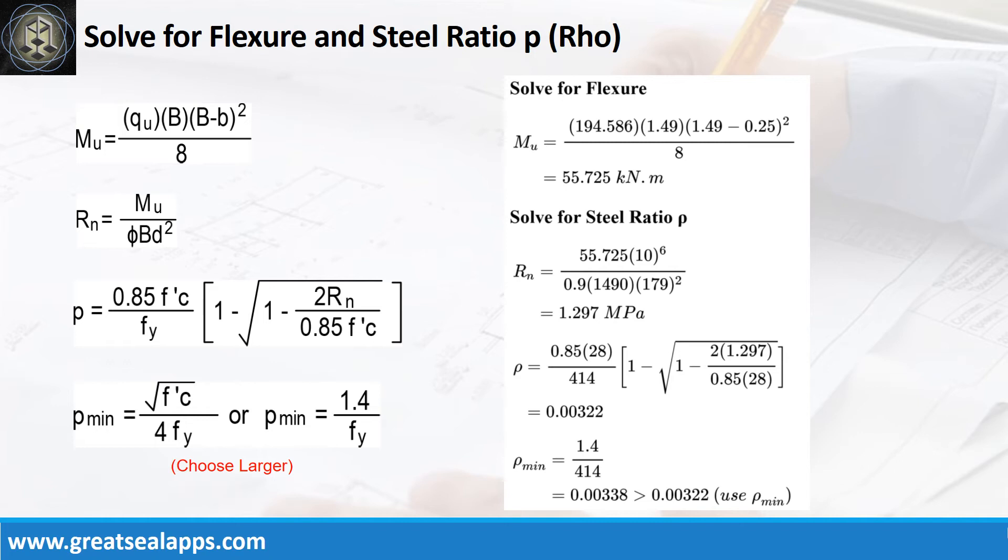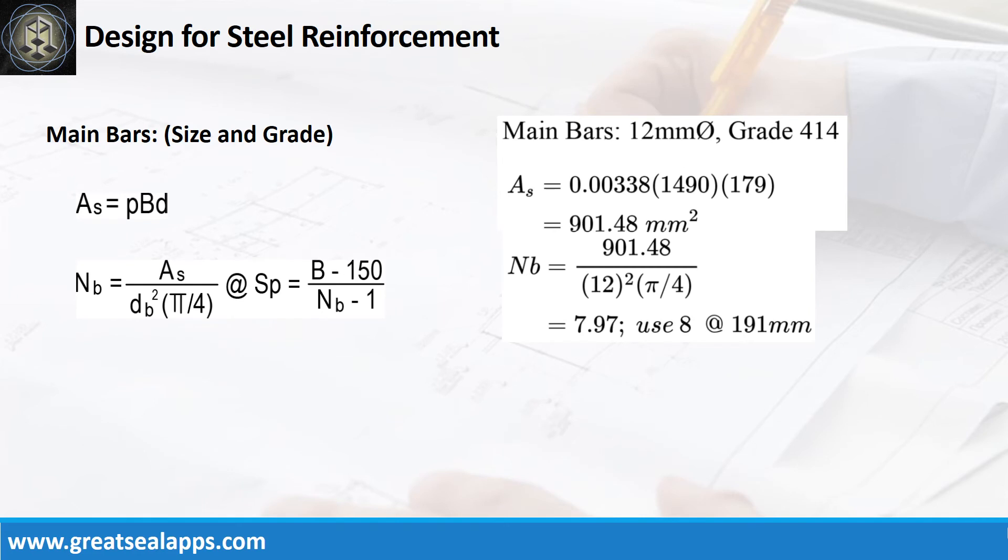The maximum moment is 55.725 kN meter. Given resistance factor equals 0.9, B equals 1490 millimeters, and D equals 179 millimeters, the beam design ratio RN equals 1.297 MPa, and reinforcement ratio rho equals 0.00322. Use rho minimum of 0.00338. Given rho equals 0.00338, B equals 1490 millimeters, and D equals 179 millimeters, the area of steel for main bars is 901.48 square millimeters, and the number of bars for 12 millimeter bar is 8.